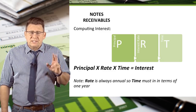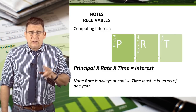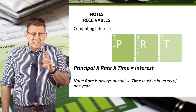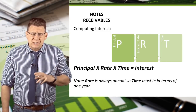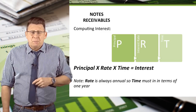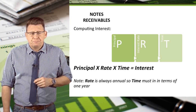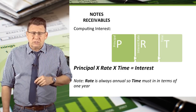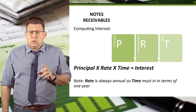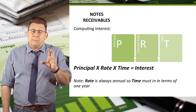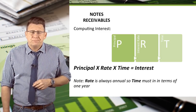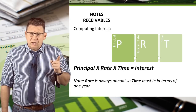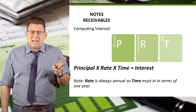Computing interest is an important part of properly accounting for notes receivable. You've probably learned how to do this calculation before in some business or financial math class, but we will revisit it here. Interest is calculated by taking the principal of the note times the annual interest rate times the term of the note. I remember this with the acronym PERT: principal times rate times time.